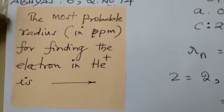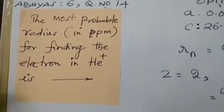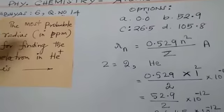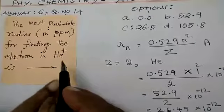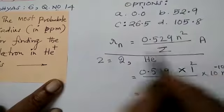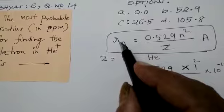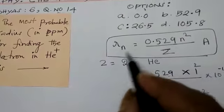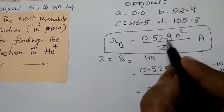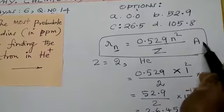The most probable radius in picometer for finding the electron in the helium ion. They are asking radius in picometer for helium. So now let us go to the thing. What is the formula for radius? This is the formula. The radius of any ion in the nth orbit is equal to 0.529 n squared divided by z Armstrong unit.